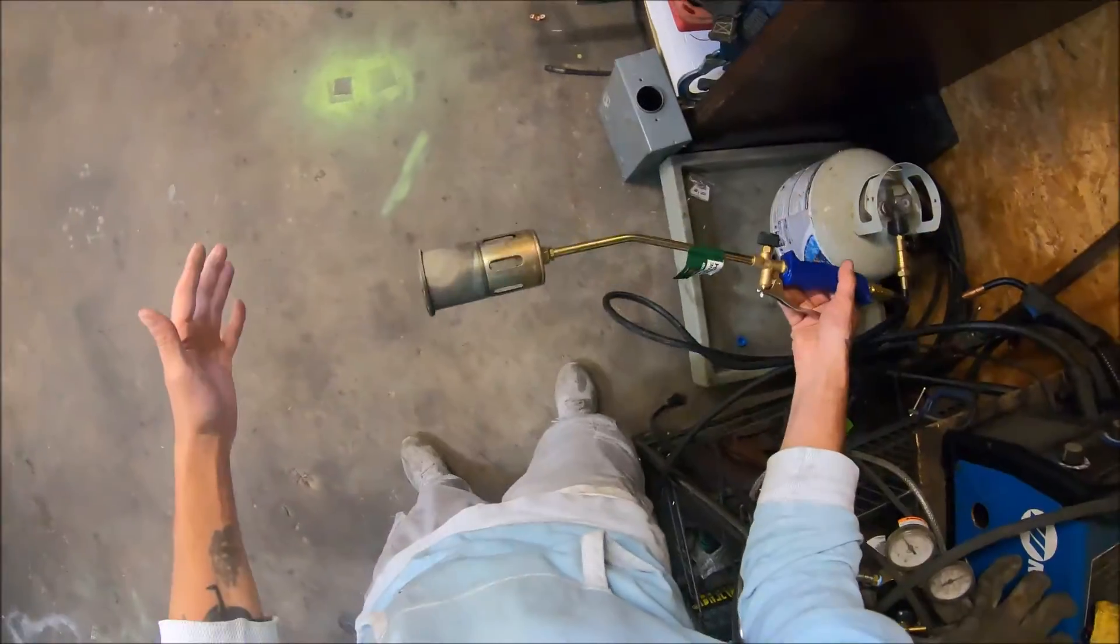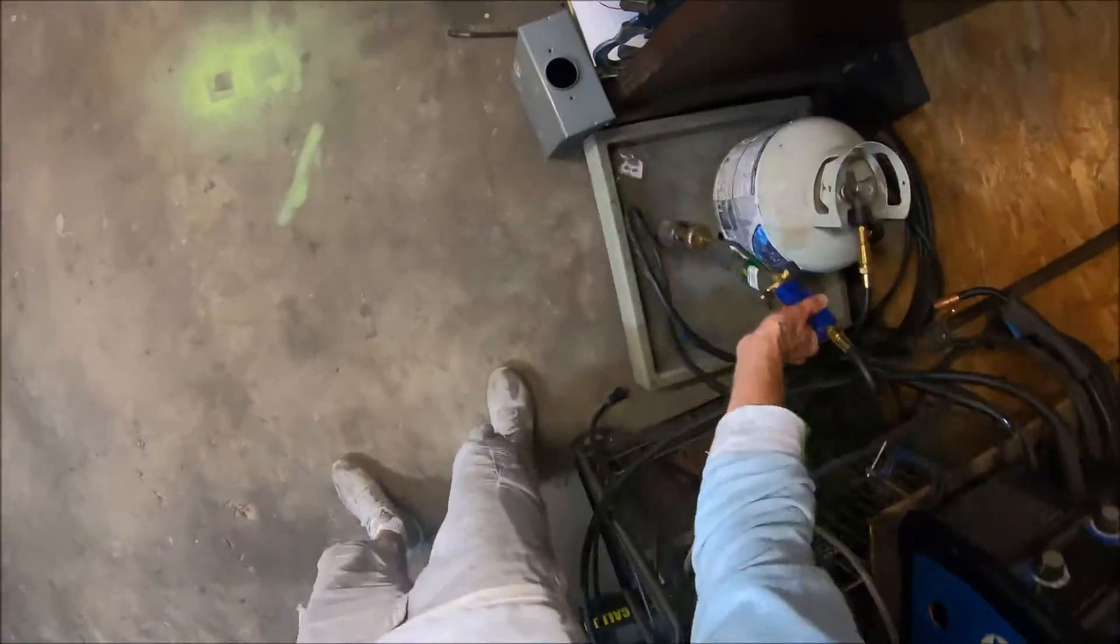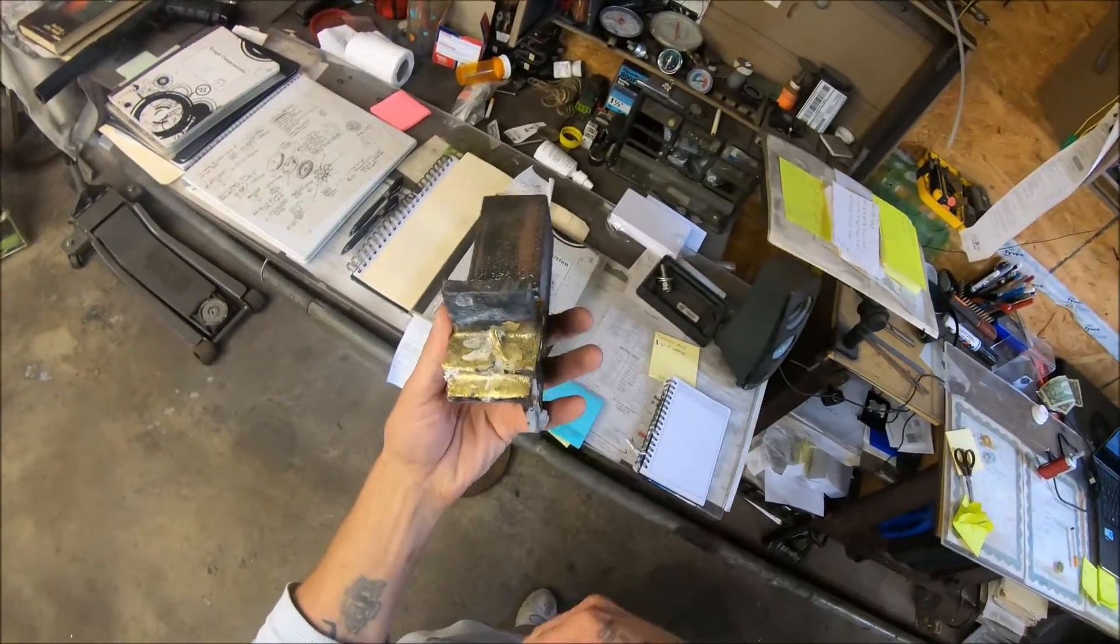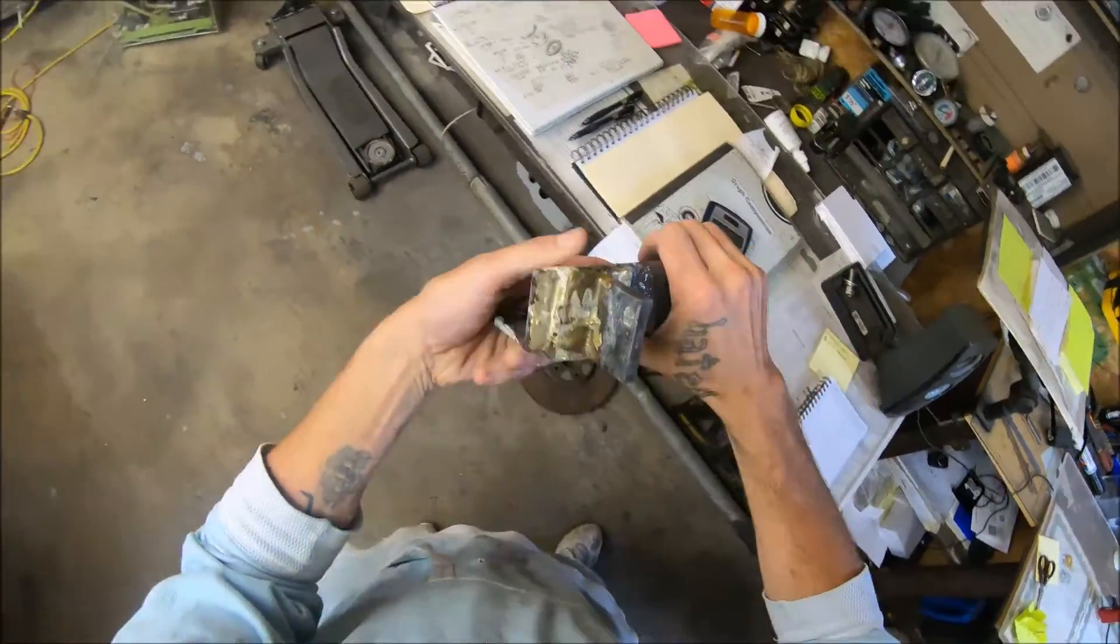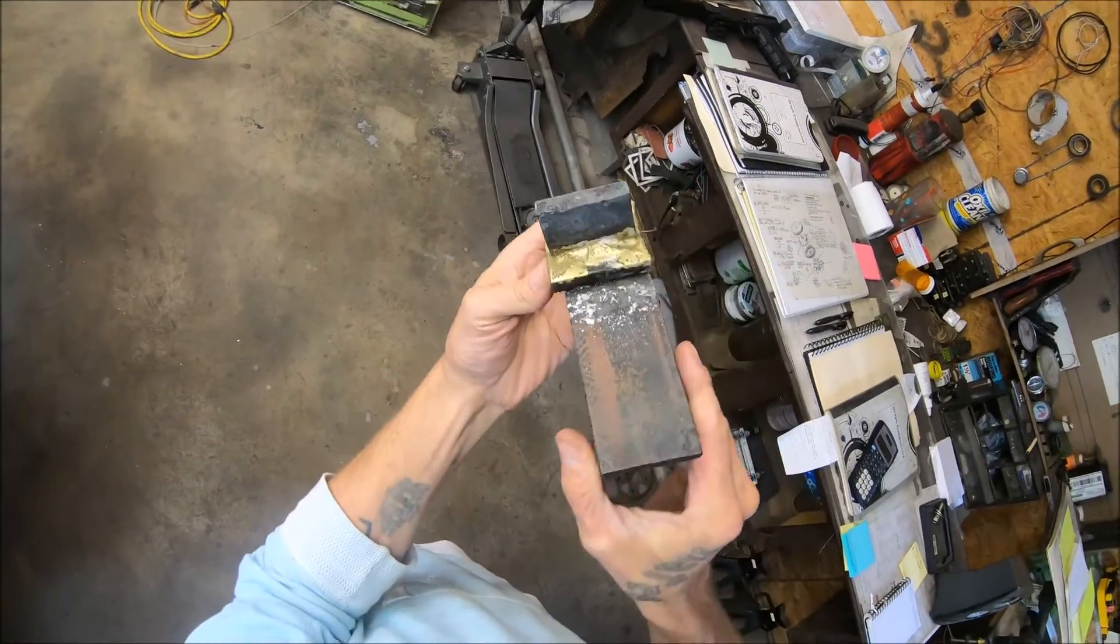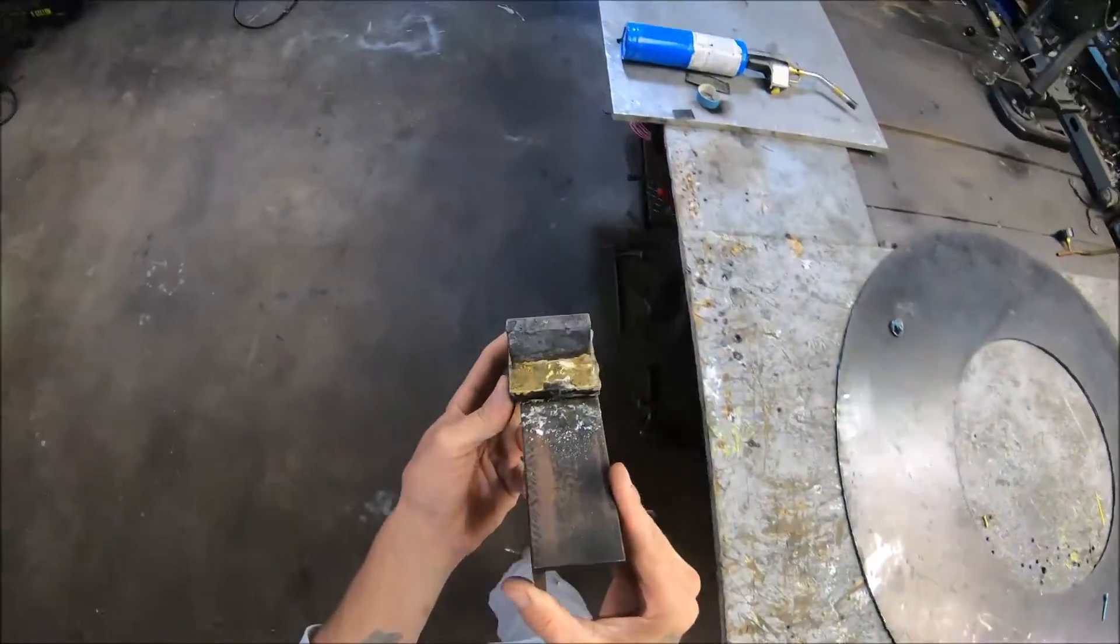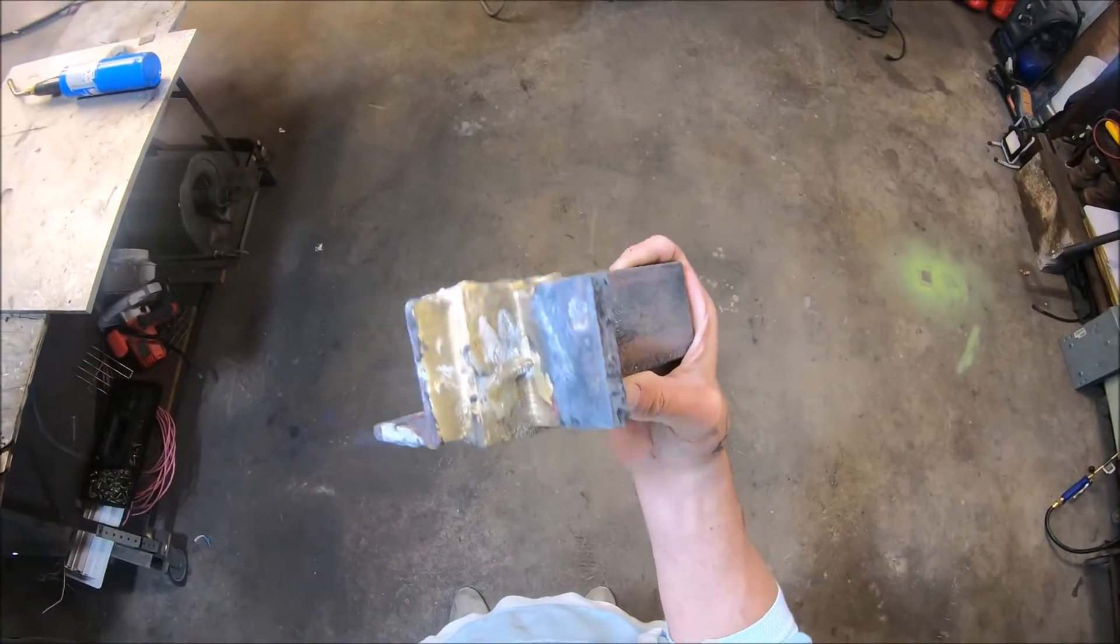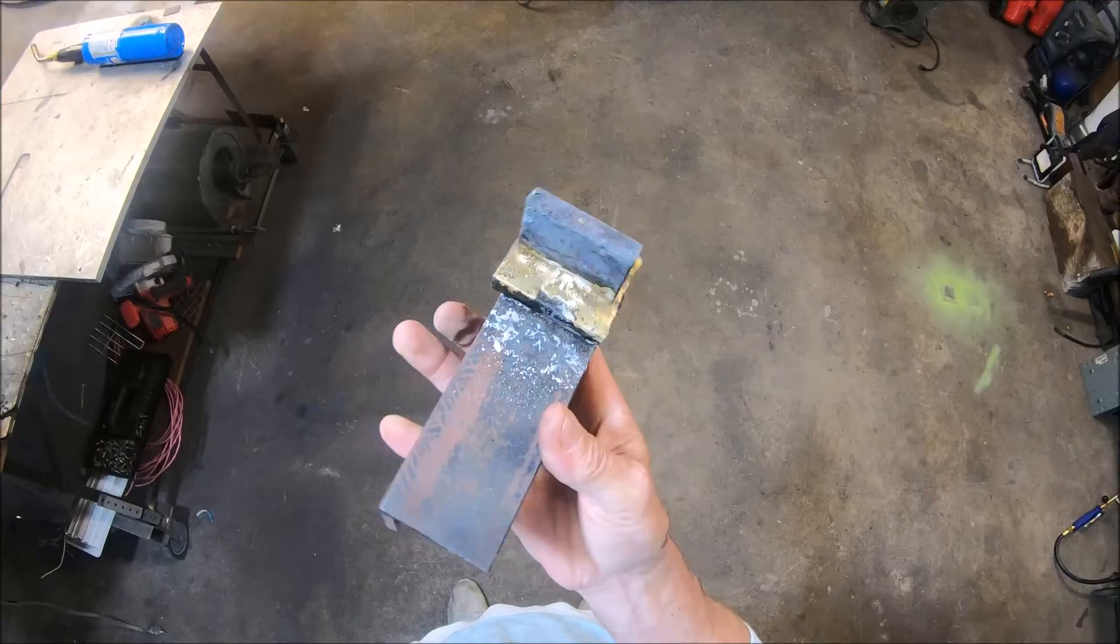This thing puts out one heck of a flame. We're talking about this big, but you can't braise with this. Yeah, it's got a little flux stuck on it, but as you can see here I was able to braise this quarter inch steel with that torch. That's some big chunks of quarter inch steel.